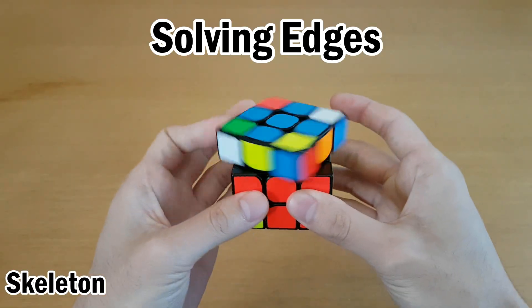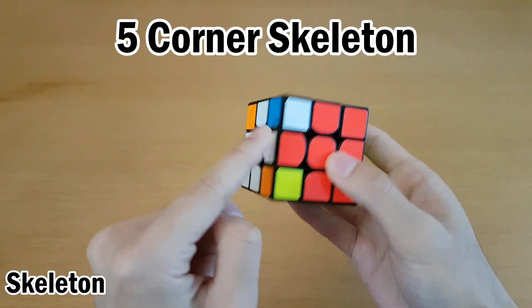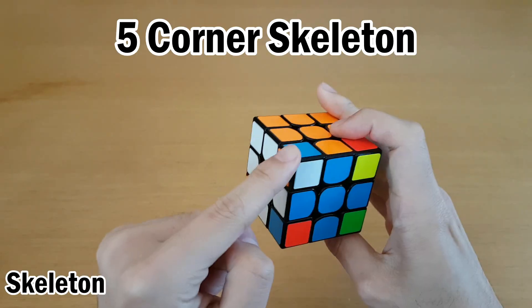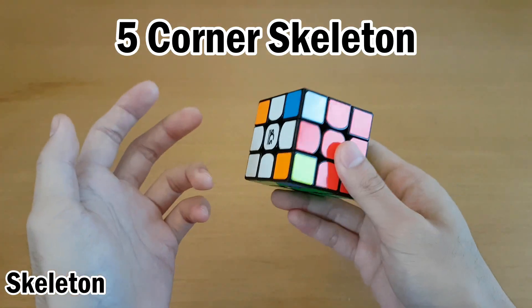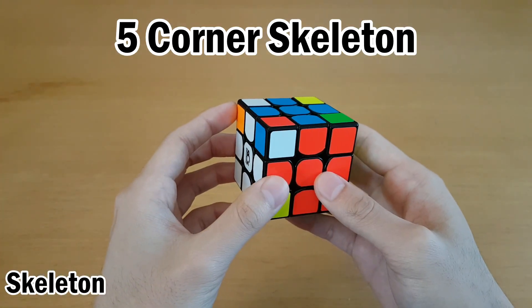If you do that correctly, all the edges will be solvable. And then we have one, two, three, four, five corners that are not solved. And this is a skeleton that will be solved using insertions.